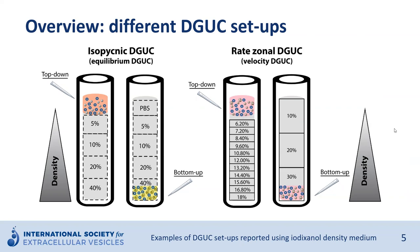Independent of the setup, density gradients are prepared by layering dilutions of a density medium of progressively decreasing density and viscosity from the bottom to the top in an ultracentrifuge tube. Different biofluids require different approaches regarding the setup of the density gradient, the sample loading approach — top or bottom loading — the choice of the density range, as well as the centrifugation time and speed.